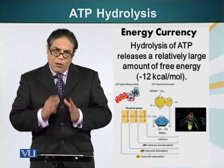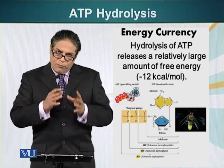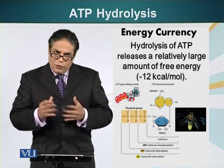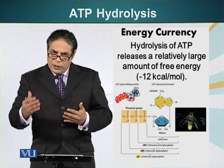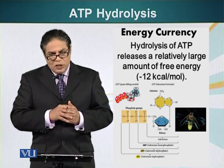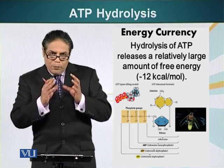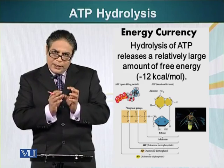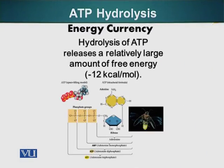ATP is a molecule that can store energy in the form of high-energy phosphate bonds — phosphate groups attached to other phosphate groups. Phosphate groups are negatively charged, so having a bunch of phosphate groups linked together is like compressing a spring. Just as a spring can contain potential energy, these phosphate bonds also contain energy. The structure of the ATP molecule is on the screen — you can see the three phosphate groups attached to each other, to the ribose sugar, which is attached to adenine.